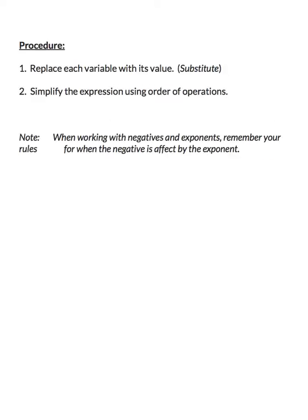So our procedure. The first thing we're going to do is talk about evaluating expressions. This is basically the easiest thing to do when it comes to algebra because as soon as we take care of the first step, we're not doing algebra anymore, we're back to arithmetic. The first thing that we want to do is replace each variable with its value. We're going to substitute those numbers into our expression, and then we want to simplify the expression using order of operations.